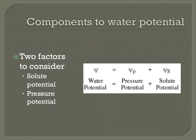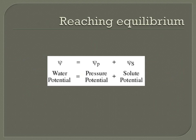Water will always move towards the area of lower water potential. One very important thing to recognize when solving water potential problems involves what the phrase 'in equilibrium' means. When a cell is in equilibrium, that means the water potential is zero, so there is no net osmosis — water flows in each direction equally. For example, if you know that a cell is in equilibrium and the solute potential is negative one, then the pressure potential must be positive one, because the sum of solute potential and pressure potential is zero.